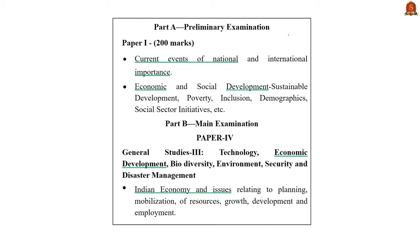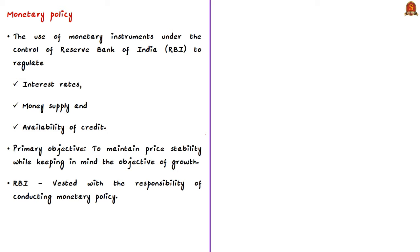The syllabus relevant to the analysis of these news articles is highlighted here for your reference. Monetary policy refers to the use of monetary instruments under the control of RBI to regulate interest rates, money supply, and also availability of credit to achieve the ultimate objective of economic policy. The primary objective of monetary policy is to maintain price stability while keeping in mind the objective of growth rates.